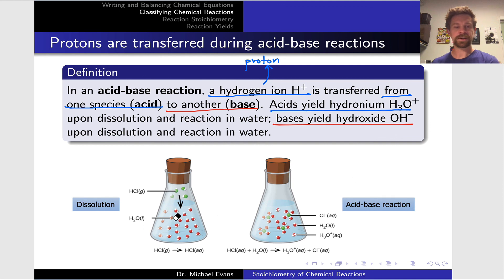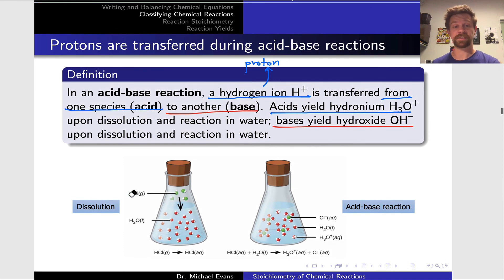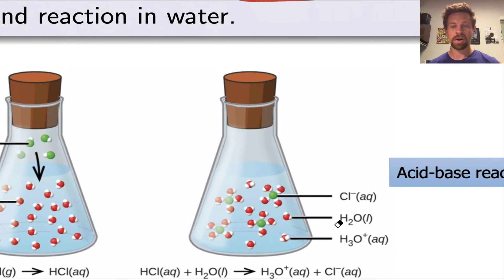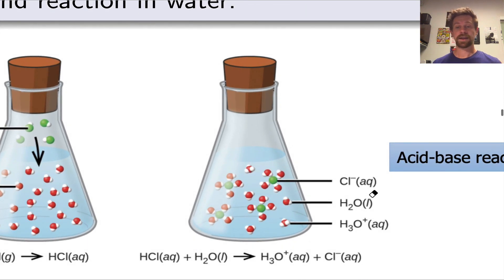The figure down here distinguishes between the dissolution of, in this case, an acid, HCl, in water, and its acid-base reaction. In the same way we distinguish between dissolution and dissociation for ionic compounds, for acids and bases, we can distinguish between the dissolution process and the actual chemical reaction, which is the acid-base reaction between HCl and H2O. The products of this, after that proton transfer has taken place, are Cl- and H3O+. A proton has been transferred from HCl to H2O to make H3O+ and Cl-. You can see the complete balanced chemical equation for this process here.